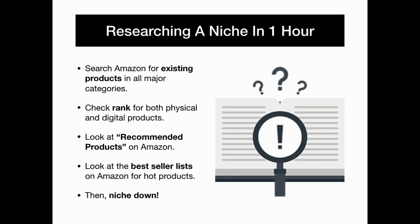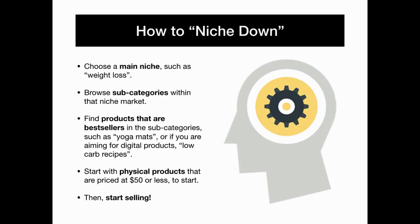Quick and easy niche research methods — research a niche in under one hour. Start by searching Amazon for existing products in all of the major categories. Check the rank for both physical and digital products, then look at the recommended products on Amazon to uncover additional products worth promoting. Look at the best selling lists on Amazon for hot trending products, then it's time to niche down. Choose a main niche such as weight loss, then browse subcategories within that niche market.